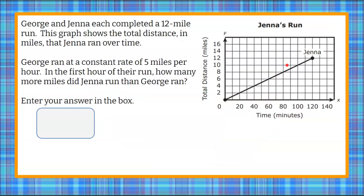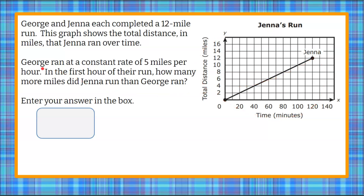Here's our question today. We have George and Jenna, who each completed a 12-mile run. This graph shows the total distance in miles that Jenna ran over time, and here's Jenna's run on the graph. Then we have George, who ran at a constant rate of 5 miles per hour.